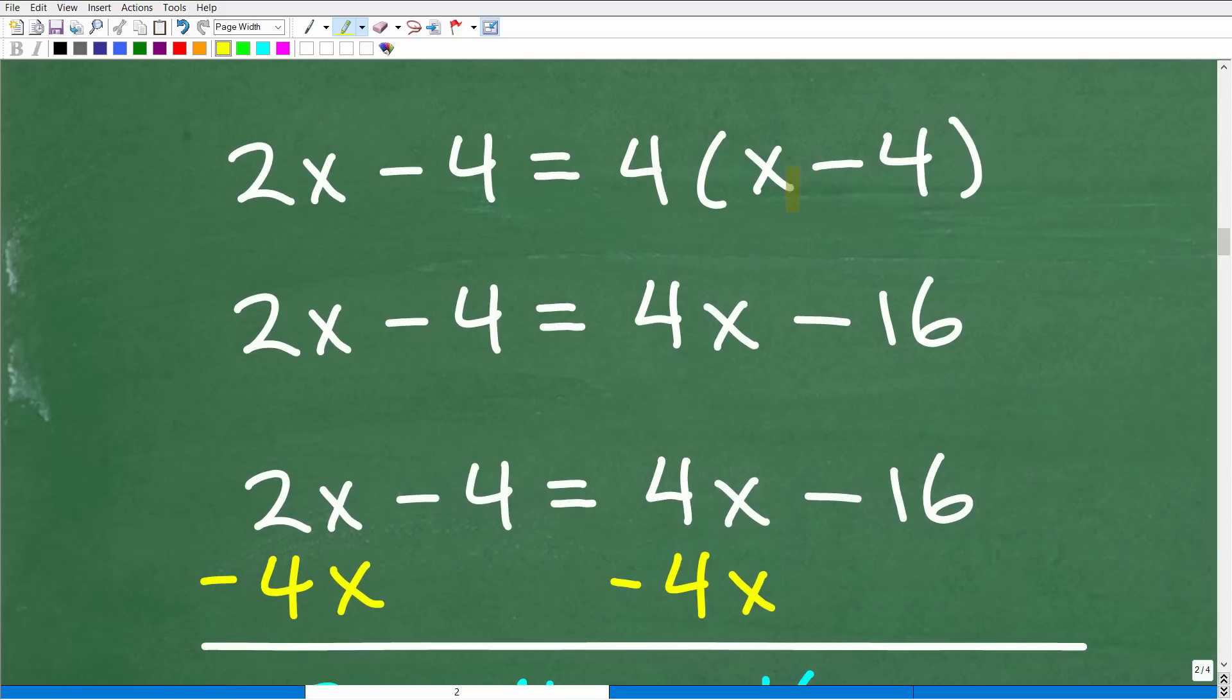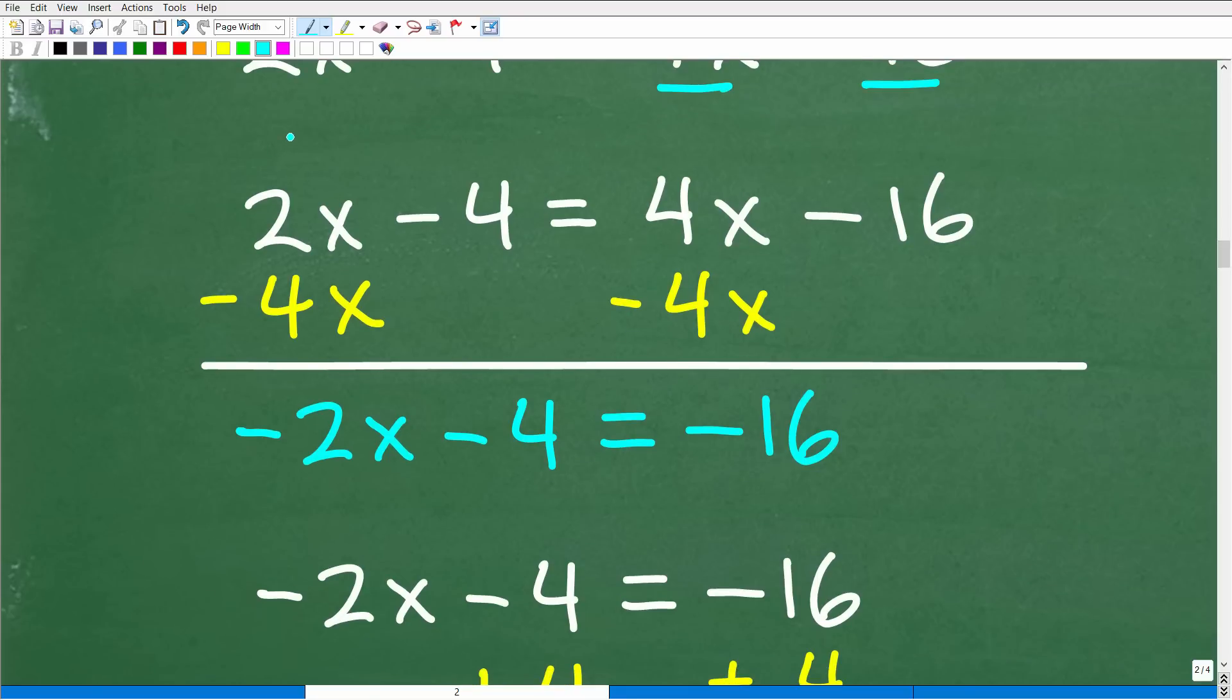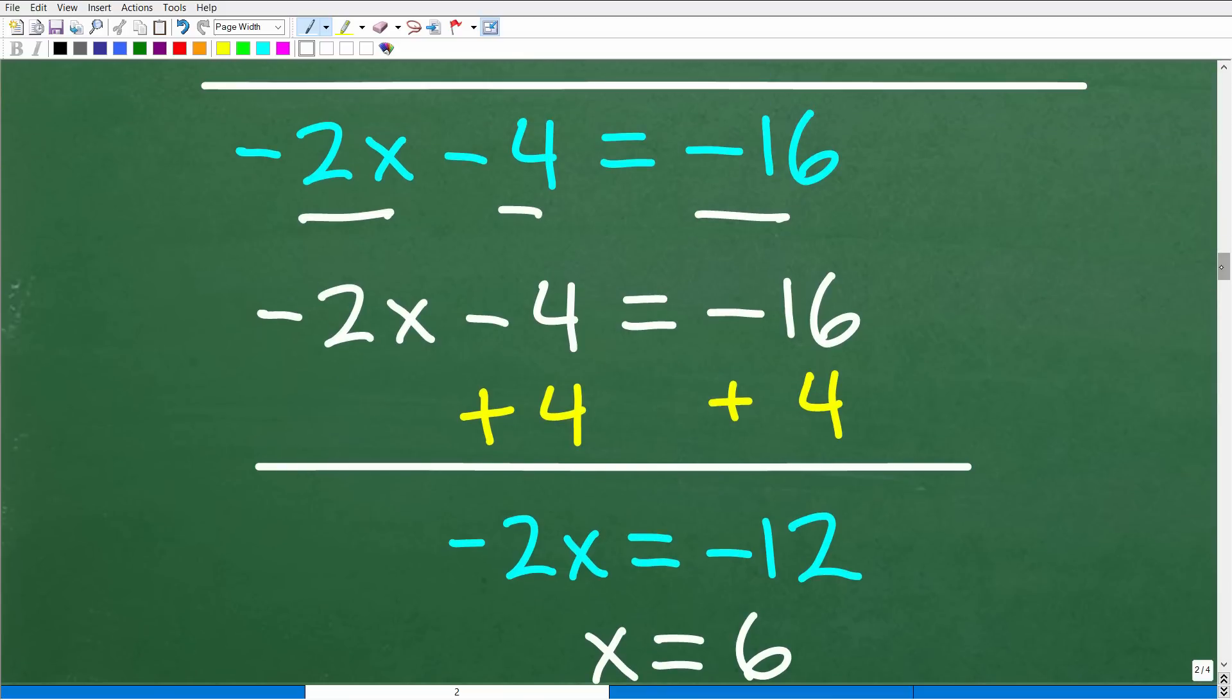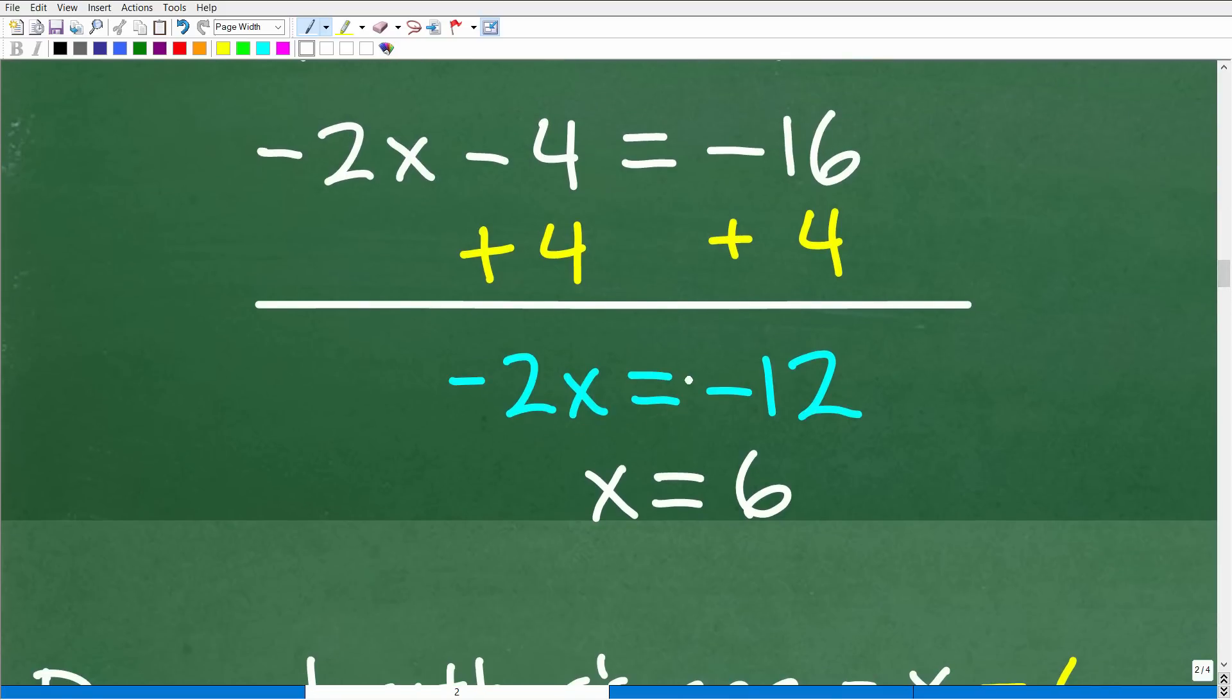Here we go. 2x minus 4 equals 4 times x minus 4. The first thing we need to do is the distributive property: 4 times that x, 4 times that 4. So we have 2x minus 4 equals 4x minus 16. Then I'm going to subtract 4x from both sides of the equation. I'm basically solving what we call a linear equation. If you are struggling with any of this, I'm going to strongly suggest checking out my Algebra 1 course and my math help program. I also have additional videos on my YouTube channel that can help you out. So here we have 2x minus 4x. That gives us negative 2x minus 4 equals negative 16. Now I'm going to add 4 to both sides of the equation. We're going to get negative 2x equals negative 12. Then I'll divide both sides of the equation by negative 2. You get x equals 6.